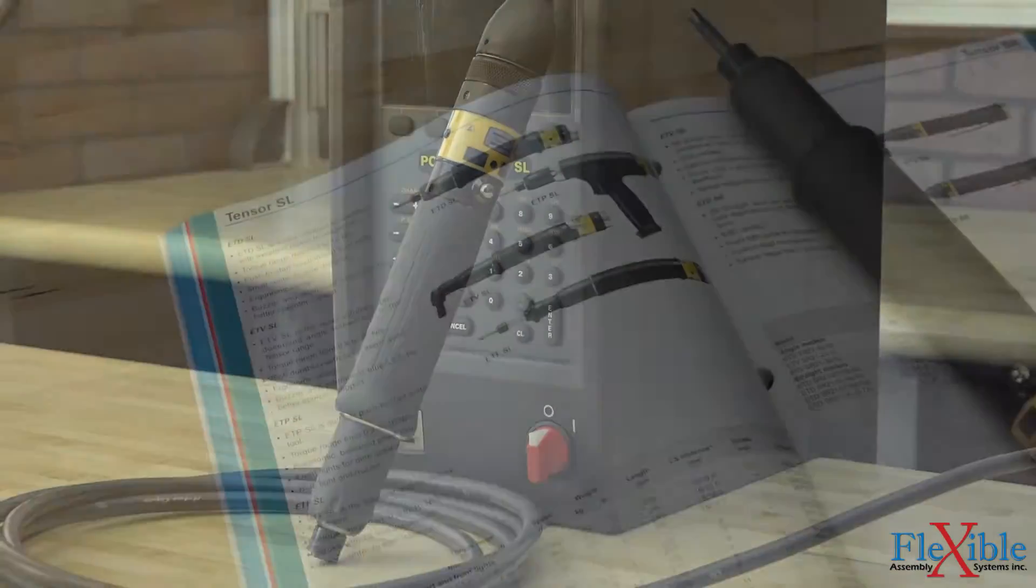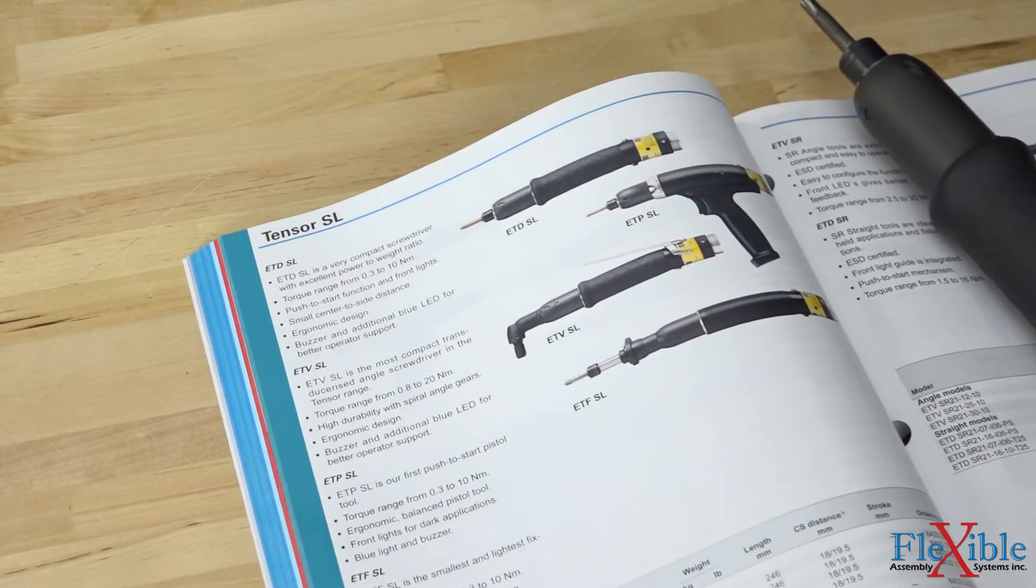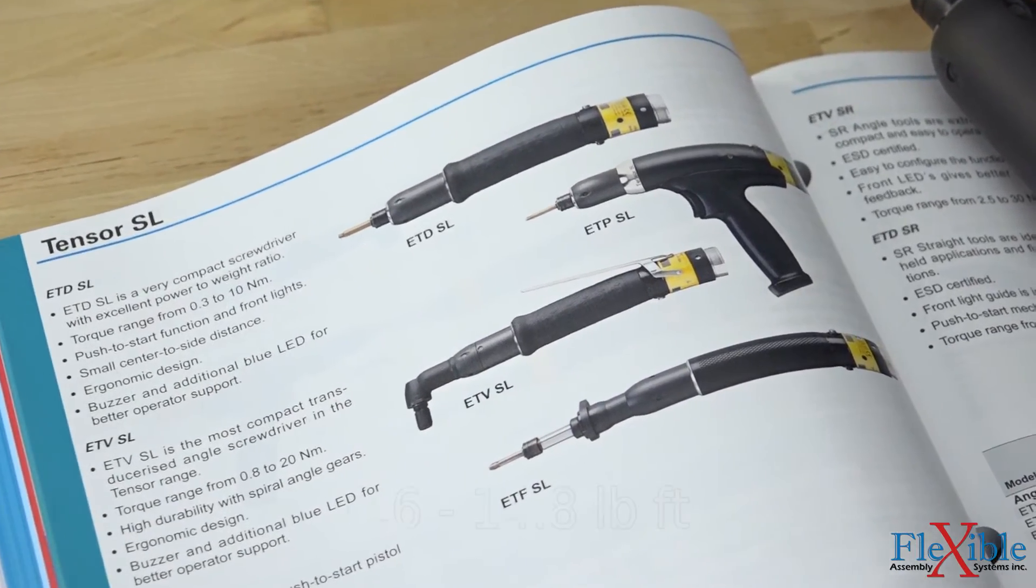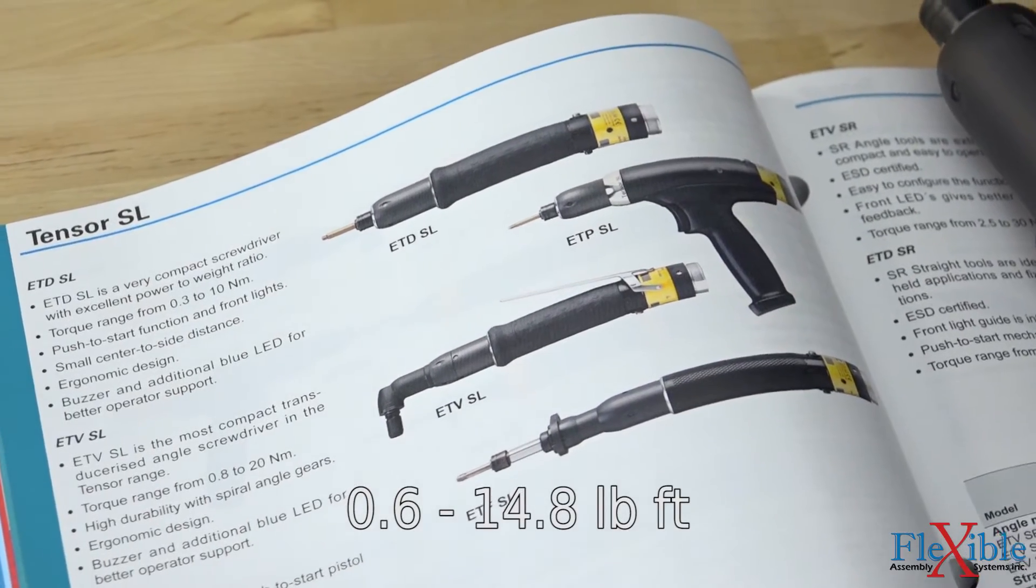Models are available at the same torque range and other form factors such as the ETP pistol grip and EFT fixture tool. The ETV right angle tool has a slightly wider range of 0.8 to 20 Nm.